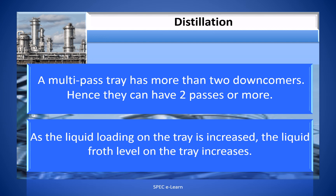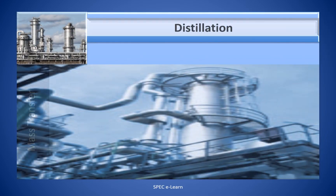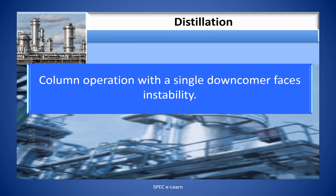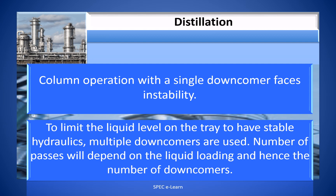As the liquid loading on the tray is increased, the liquid froth level on the tray increases. Under higher liquid loading on the tray, column operation with a single downcomer faces instability. To limit the liquid level on the tray and have stable hydraulics, multi downcomers are used. The number of passes will depend on the liquid loading and hence the number of downcomers.